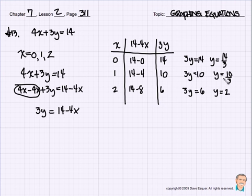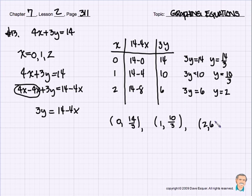So we have some ordered pairs that we should write now so that we can have three solutions to this equation. The first ordered pair is going to be x is 0 and y is 14 over 3. The second one is going to be x is 1 and y is 10 over 3. And the last ordered pair is going to be x is 2 and y turns out to be 6.